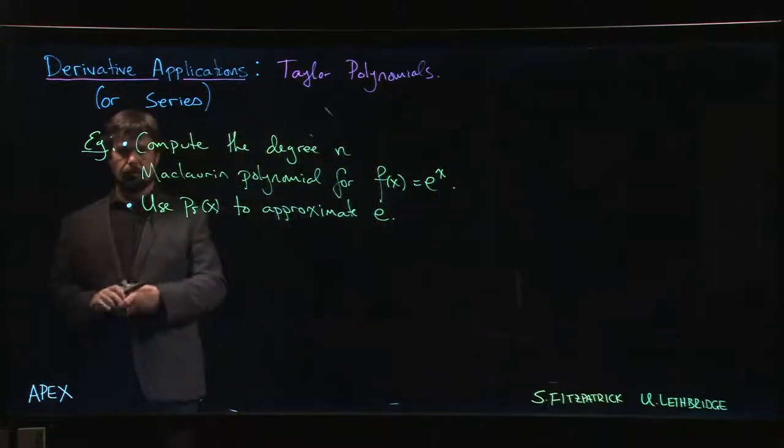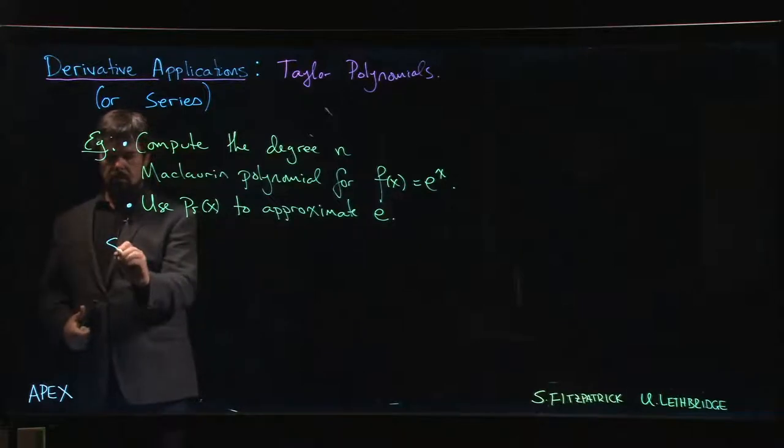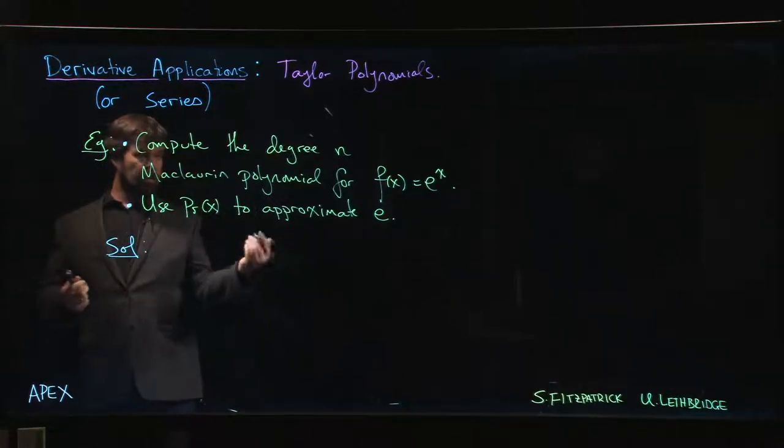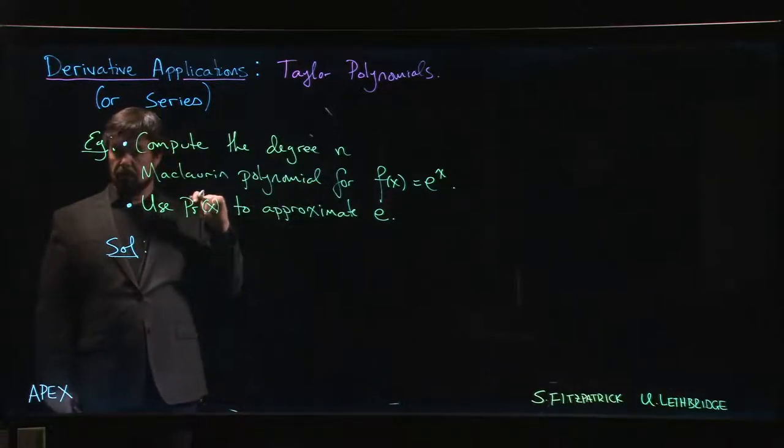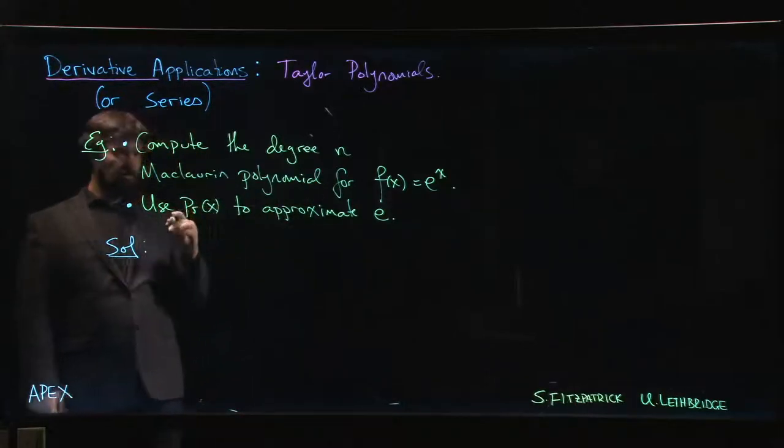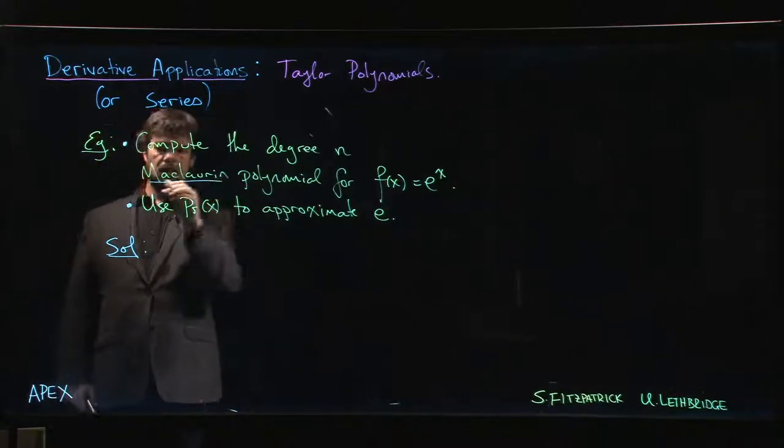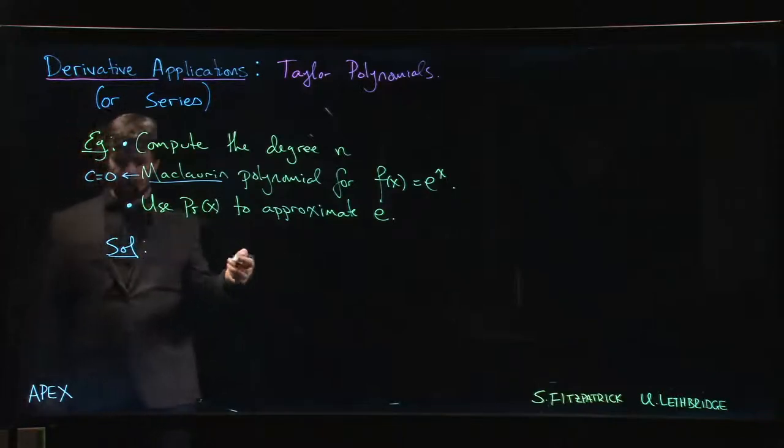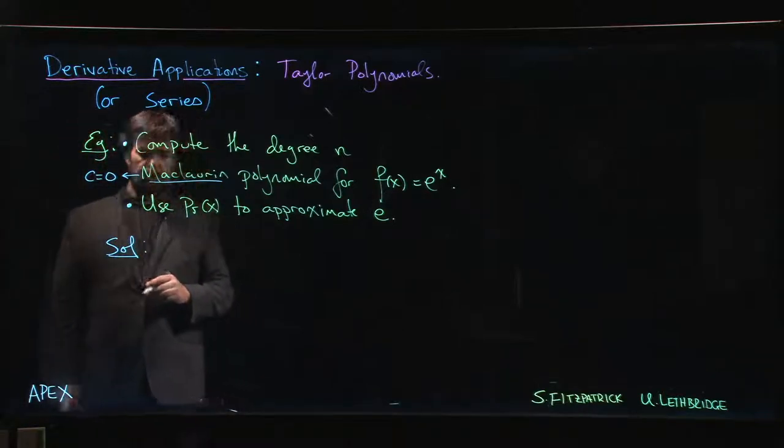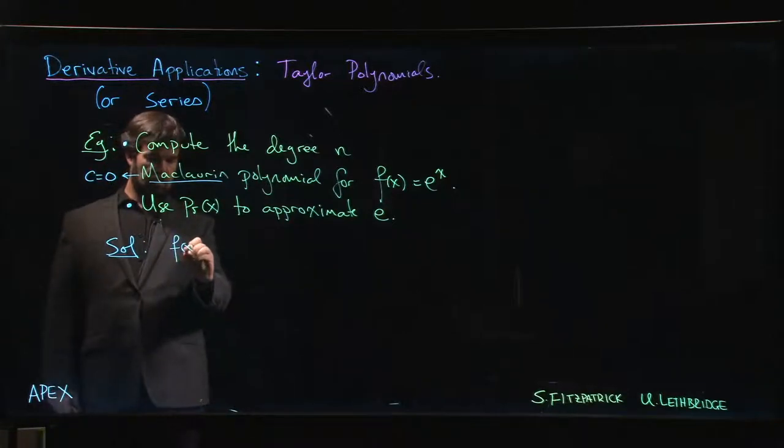Imagine that maybe you've learned all about the exponential function, you know what its derivatives are and things like that, but somehow you've made it this far in your calculus career without actually ever learning the value of e. Let's see how you might come up with it. First, we're going to try to compute the general degree n Maclaurin polynomial. Remember, Maclaurin means that we're doing a Taylor polynomial with the c value set to zero.